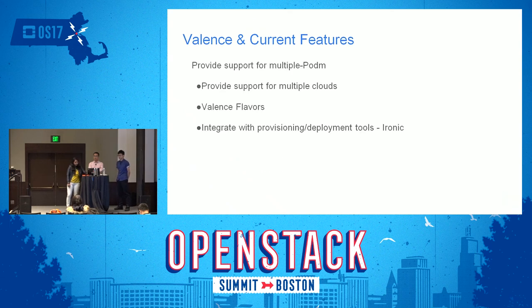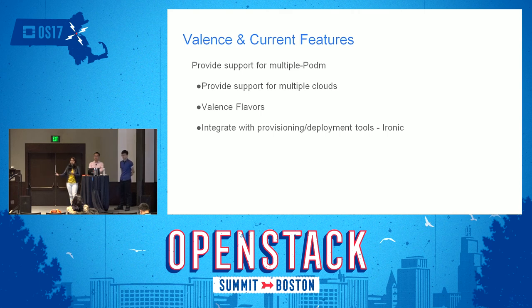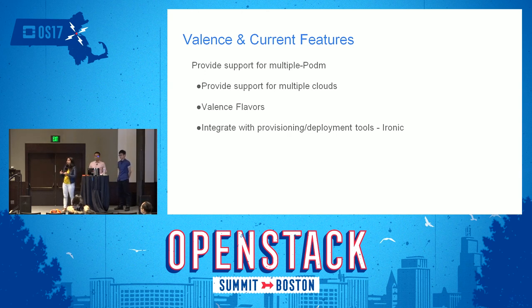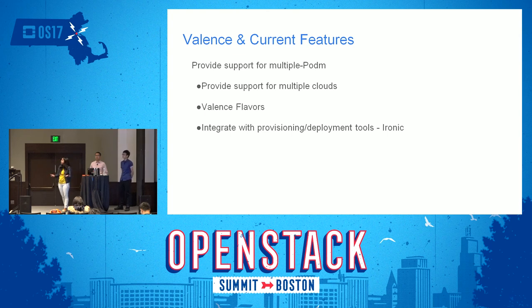Valence supports multiple pod managers. By multiple pod managers, we mean you can have multiple racks — one dedicated to OpenStack, another to AWS or Azure. It is possible to abstract different cloud providers using this multiple pod manager concept. You just specify where your pod manager is running and the credentials to talk to it, and Valence can manage different cloud operators on any kind of infrastructure.